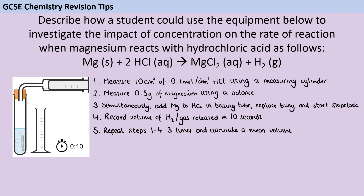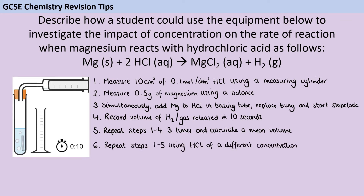Then we're going to repeat all of the steps so far and use that data to calculate a mean. There's almost never a mark just for saying repeat the investigation — it always needs to be repeat and use that to calculate a mean, because the reason we do this is to remove error in our data. Then I want to repeat everything using a different concentration of acid — for example, 0.2 molar, 0.3 molar, and 0.4 molar. This investigation will give us valid data as long as we have at least two concentrations.